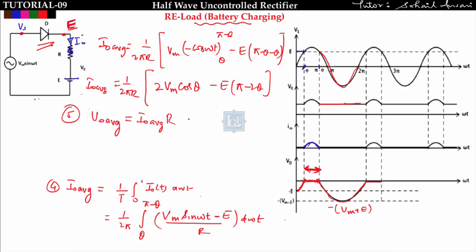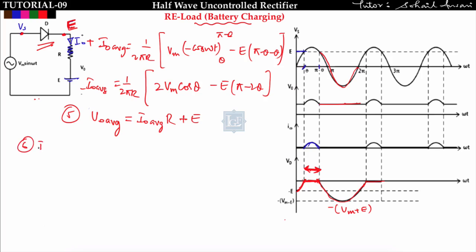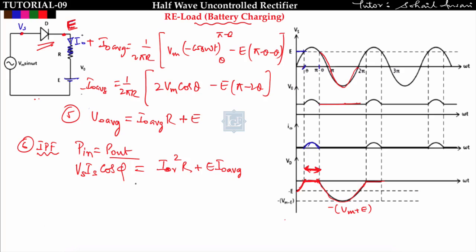Fifth, V_naught average equals i_naught_avg times R plus E. Sixth, for input power factor, set input power equal to output power: Vs_rms times i_s_rms times cos(φ) equals i_naught_rms squared times R plus E times i_naught_avg. So cos(φ) equals (i_naught_rms² times R plus E times i_naught_avg) divided by Vs_rms times i_s_rms. It is necessary to find the RMS output current.